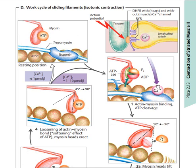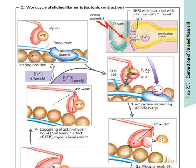When calcium ions bind to the troponin, it is going to cause the rotation of the light chain. That rotation of the light chain causes the tropomyosin to come in contact with the myosin head. There is then a reaction at the level of the myosin head: ATP breaks down to produce ADP and inorganic phosphate. That breakdown causes the push of the light chain.